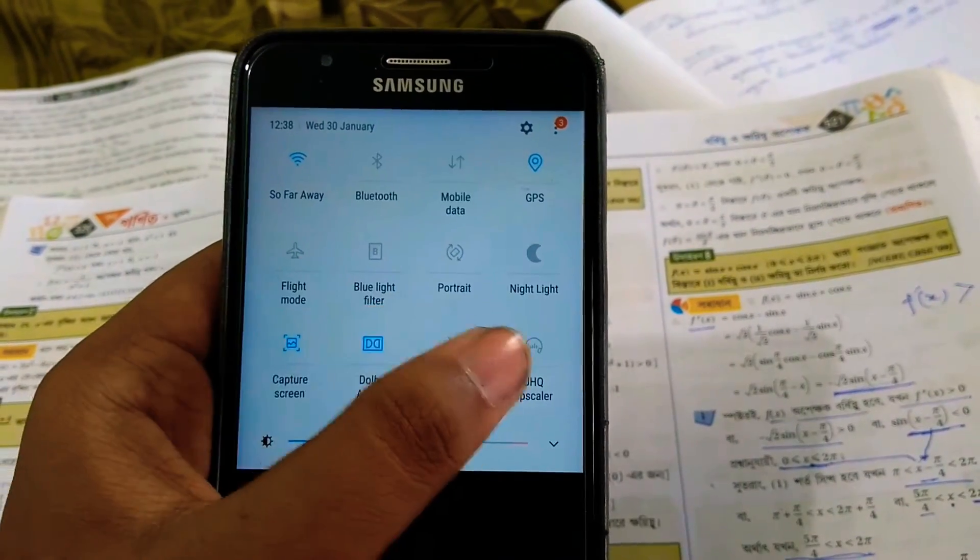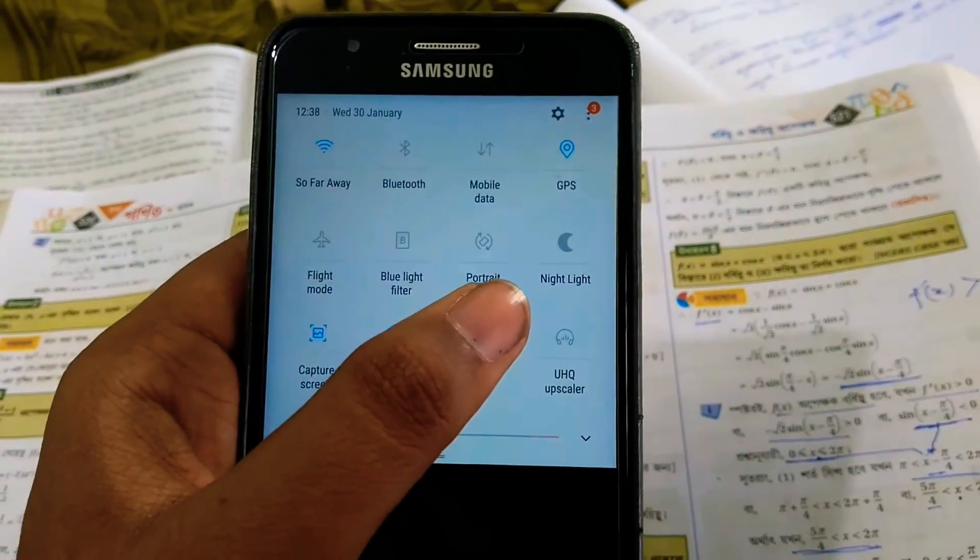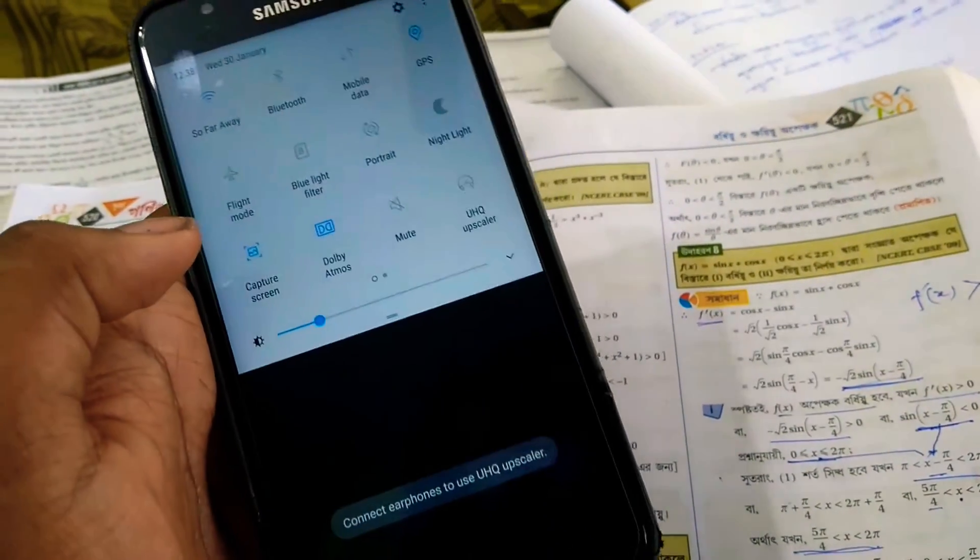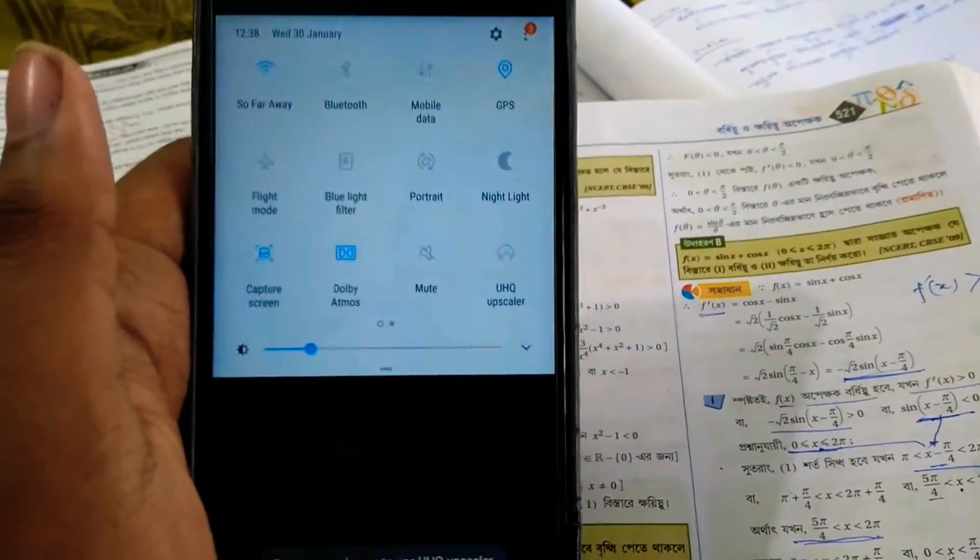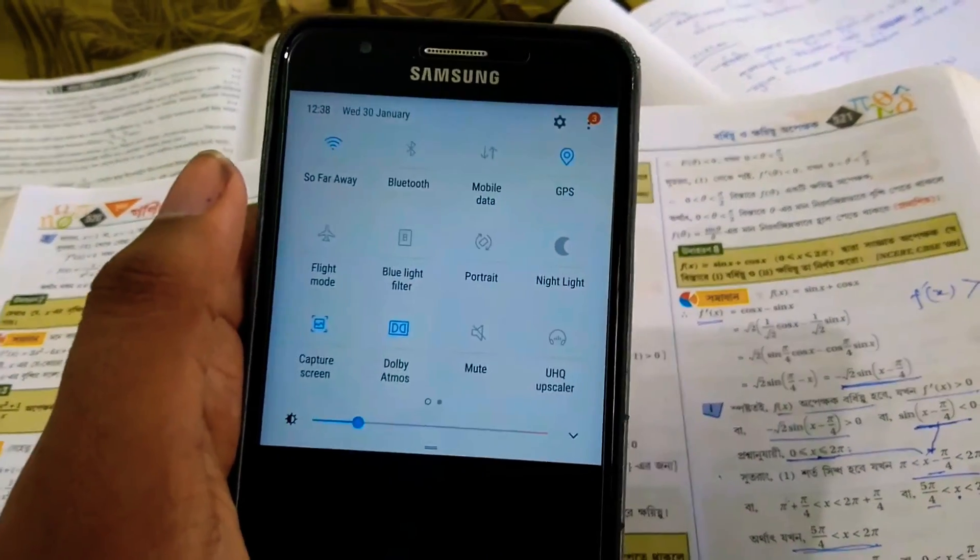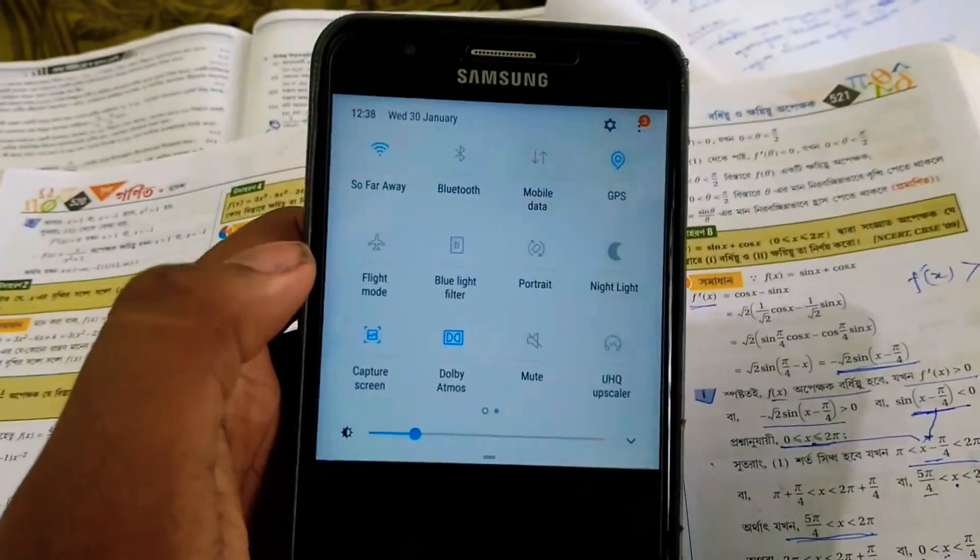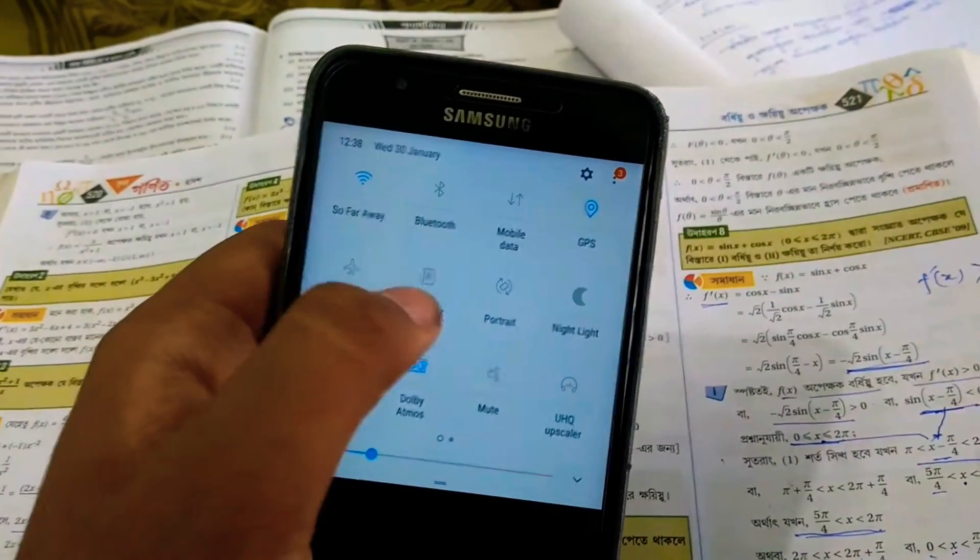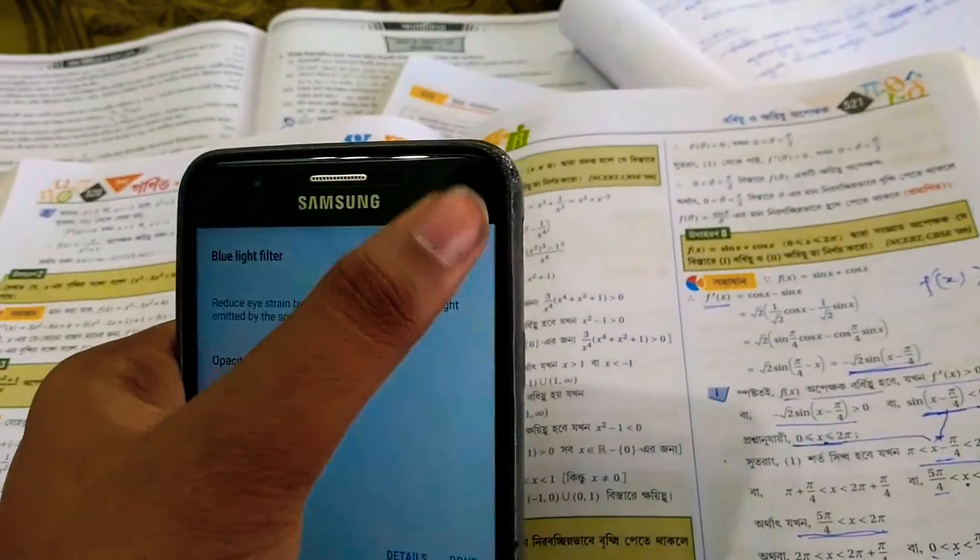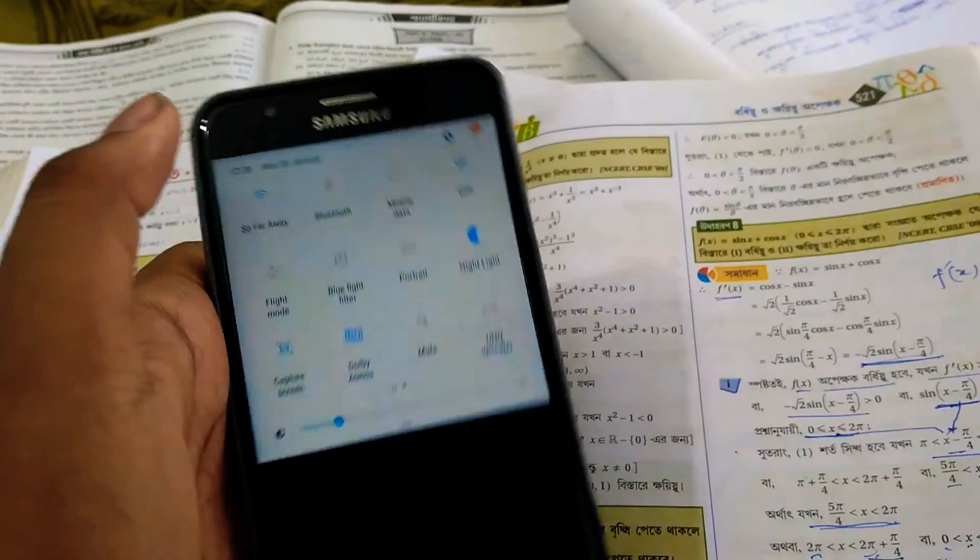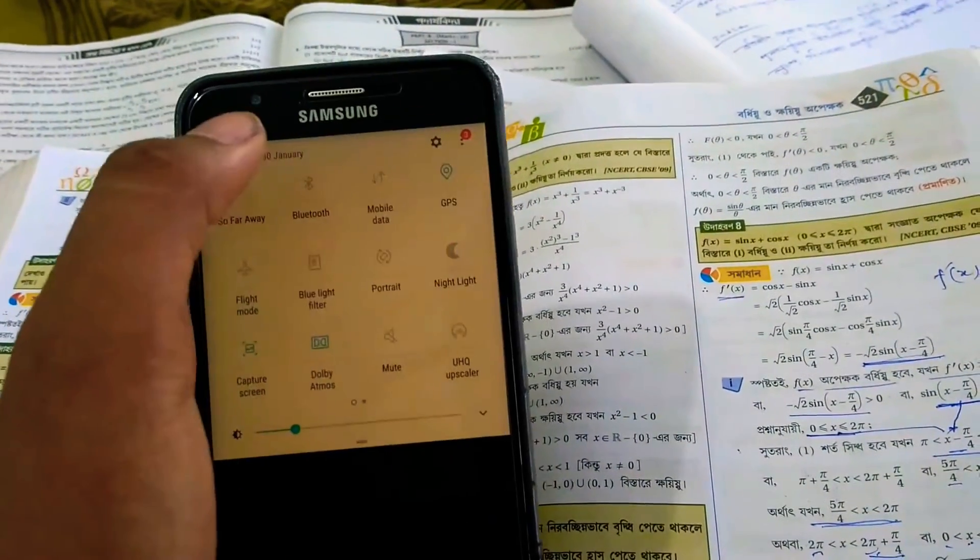There's Screen Capture as usual and UHQ upscaler—it also helps to increase the headphone sound a bit, but it doesn't work. It's connected to headphones but even it doesn't work with Bluetooth headphones because I've tried using my Bluetooth headphone. You can see blue light filter and night light. The blue light filter is Samsung's original but it doesn't work—it's just broken. The night light is there and it works, as you can see.